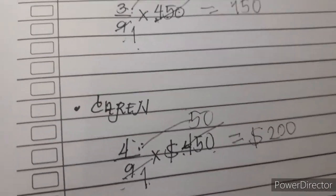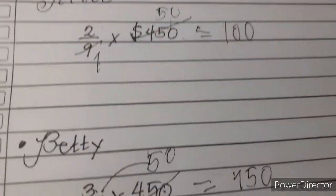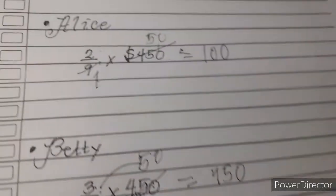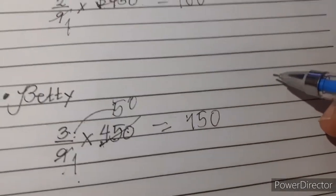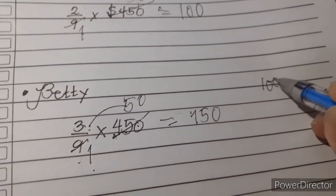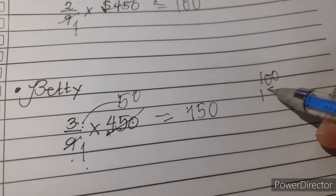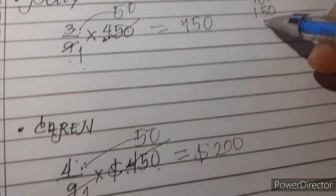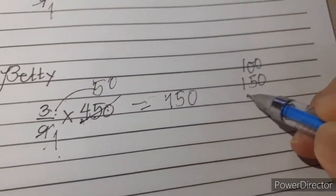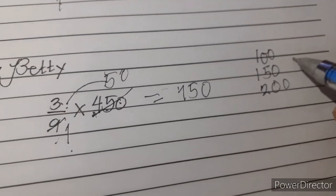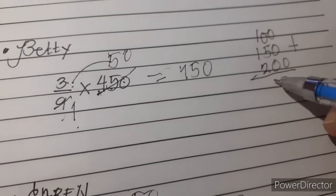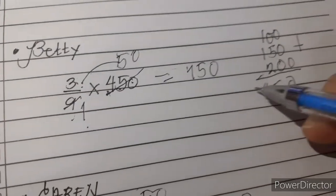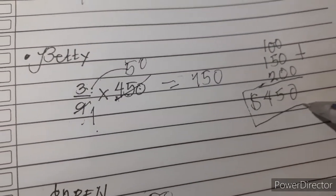Let's check if the total of their allowance is $450. We have $100 plus $150 for Betty's allowance plus $200 for Karen's allowance. Adding them, we have 0, 5, 4. Therefore, the total of their allowance is $450.